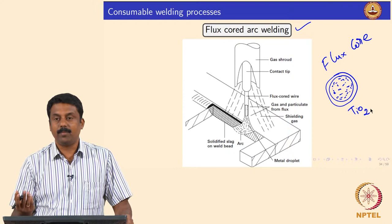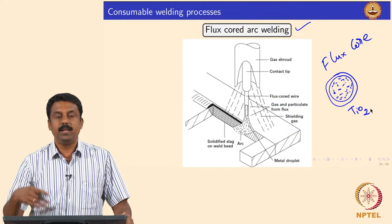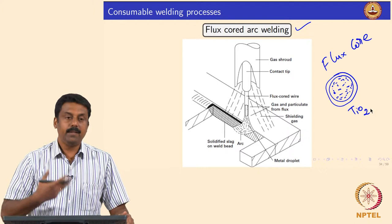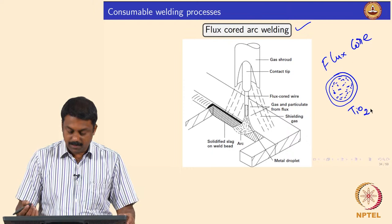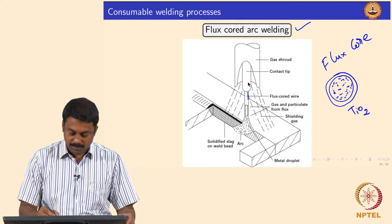The process can be shielded or self-shielded. In the self-shielded case, you generate carbon dioxide by burning the fluxes. You can also replace calcium carbonate completely with other fluxes, and you can provide shielding gas as well — argon shielding is also possible. The schematic is the same as in MMAW; the only thing that is different is the electrode geometry. This is the flux cored wire, contact tip, and the gas shroud.